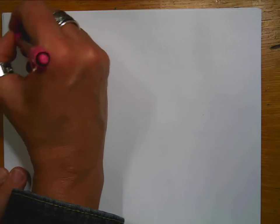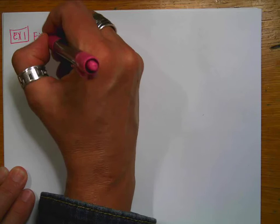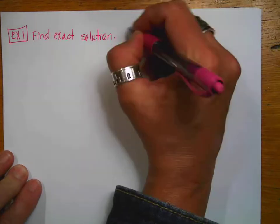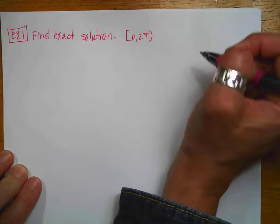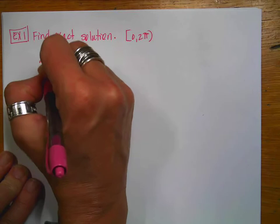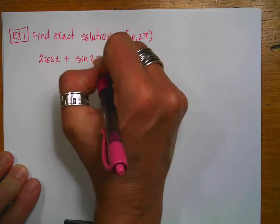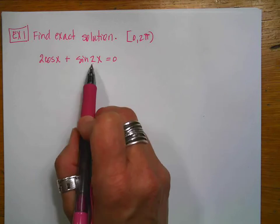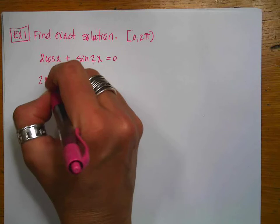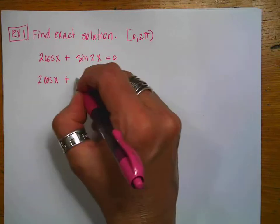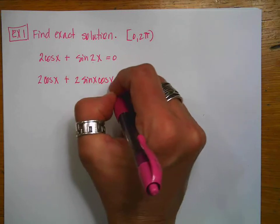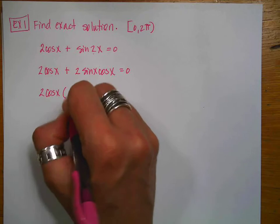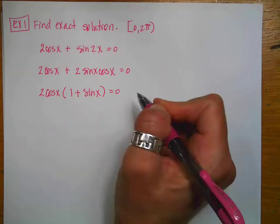Let's jump in with our first example. This one says find the exact solution — all of the formulas help us find exact solutions when the problem might not be given where an exact solution is apparent. So we have 2cos(x) + sin(2x) = 0. Notice that 2x is one of our double angle formulas, so I'm going to use that to rewrite this. So: 2cos(x) + 2cos(x)sin(x) = 0. Factoring is my favorite f-word. I'm going to take out 2cos(x) and get 1 + sin(x) = 0.